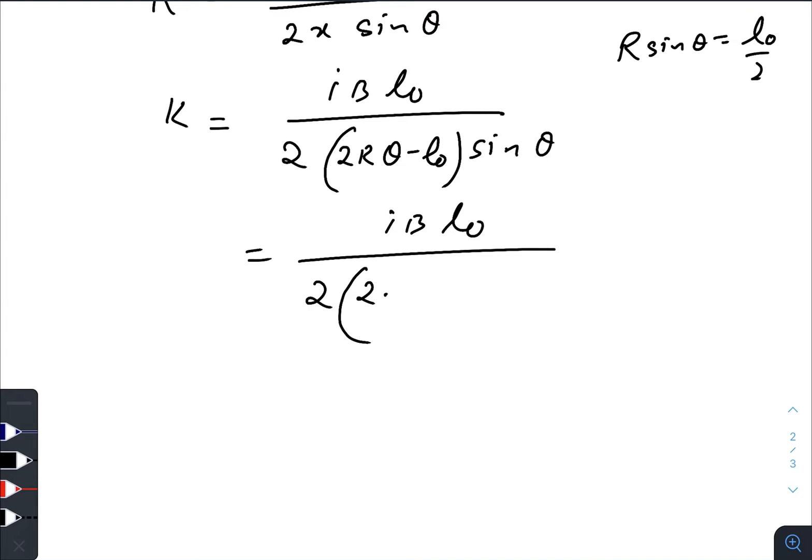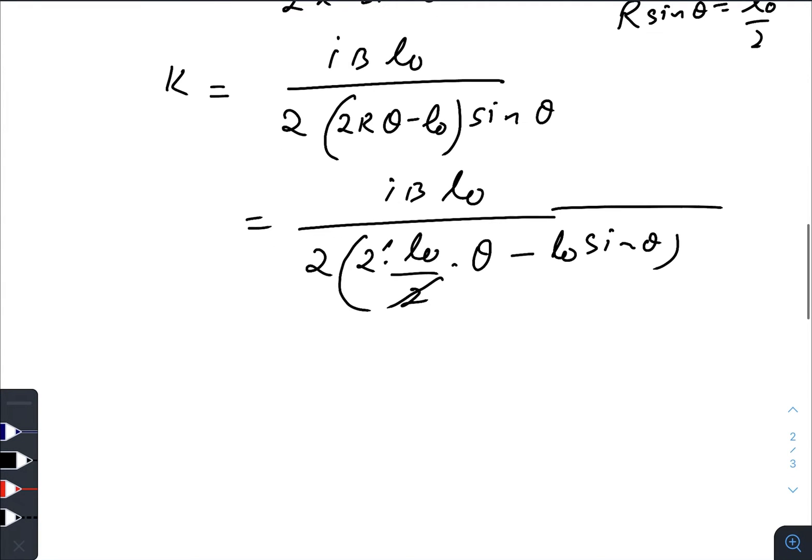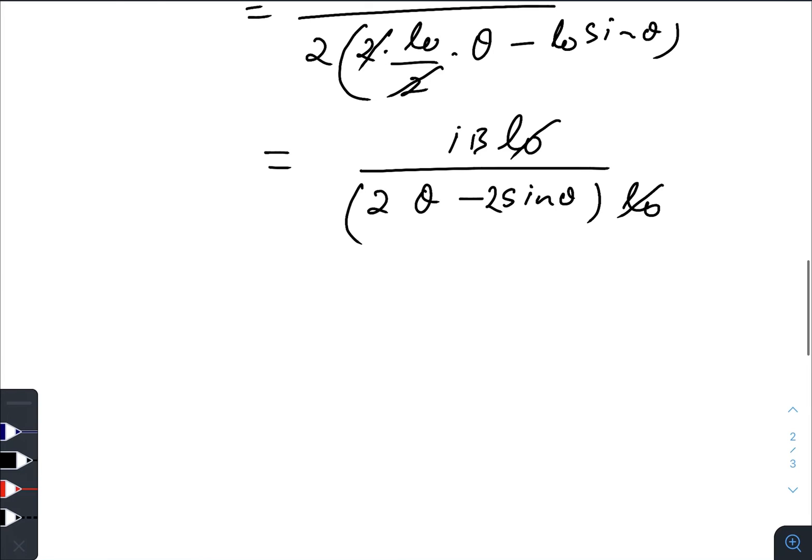If you put sin θ into the bracket, R sin θ gives you l₀ divided by 2, so 2 gets cancelled out. IBl₀ divided by 2θ minus 2 sin θ times l₀. We have k equals IBl₀ divided by 2(θ - sin θ). This is the value of k which varies with theta.